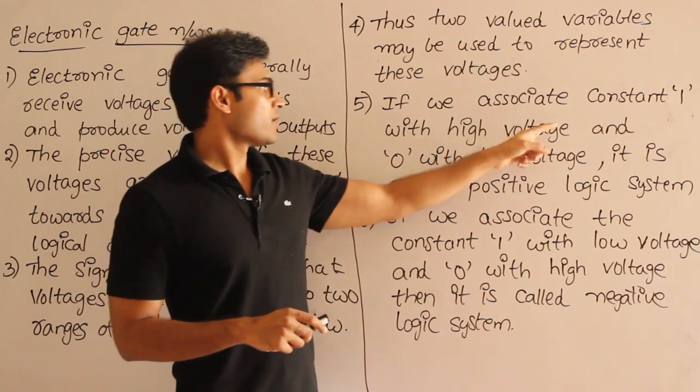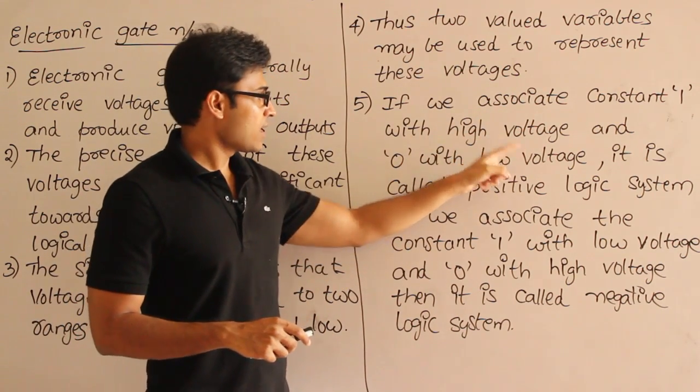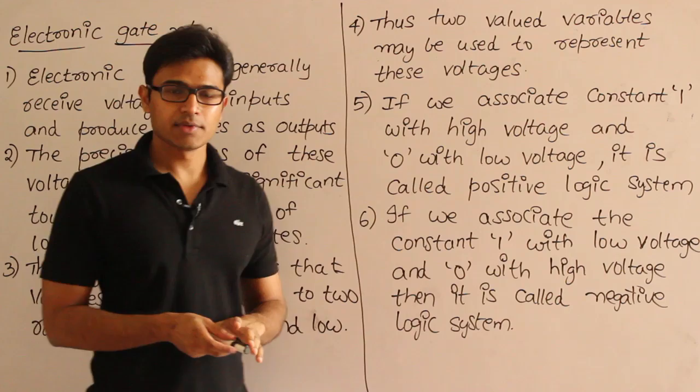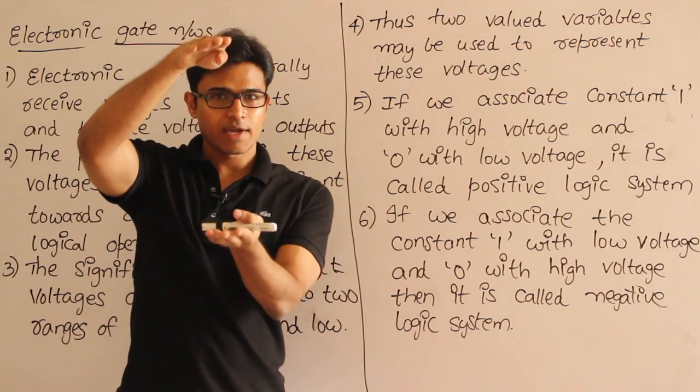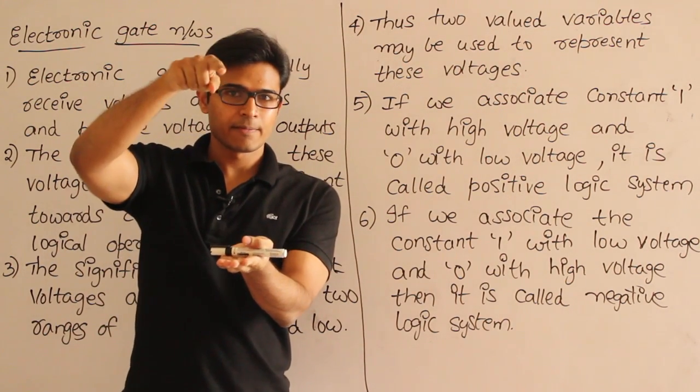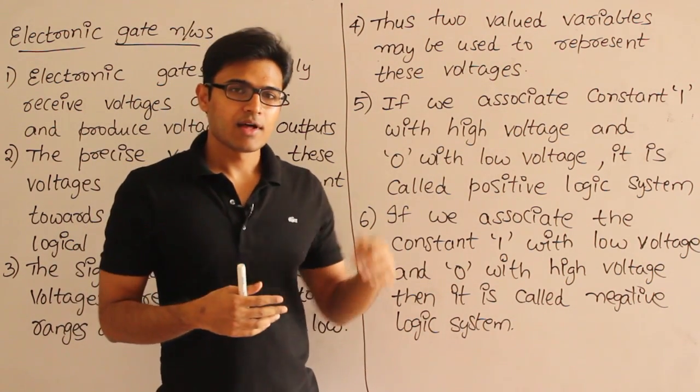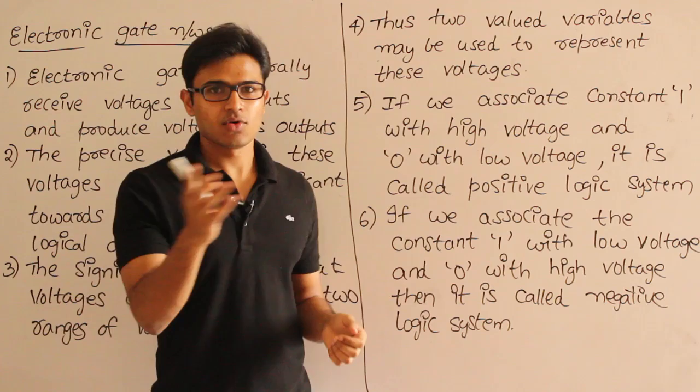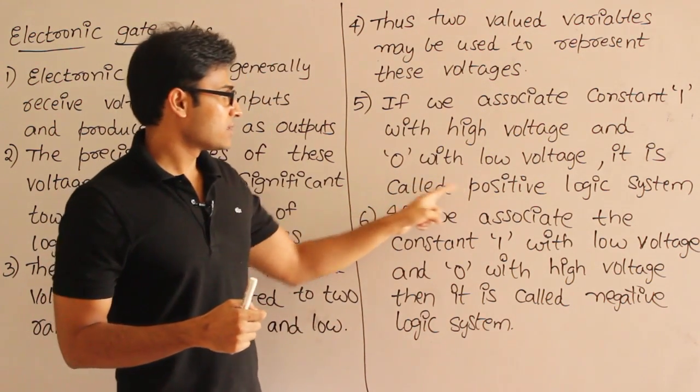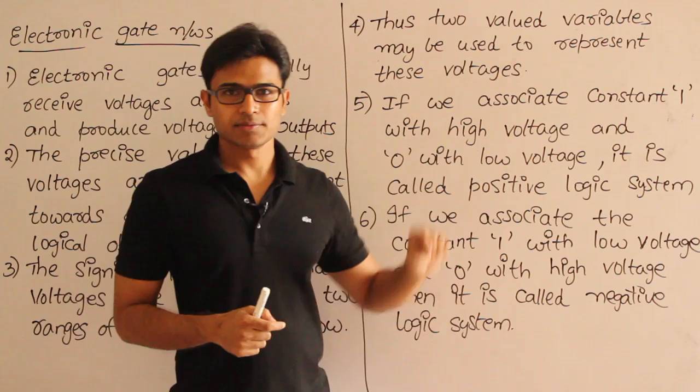If we associate a constant 1 with the high voltage and a constant 0 with the low voltage - which means for the level which we are having, high voltage level, if you put a 1 there, and the low voltage level if you take 0, that is normal, it is logical. High voltage is represented with 1 and low voltage is given a value of 0. If that is the case, then it is called positive logic system.